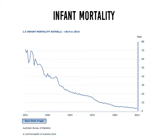Over time there have been quite a few initiatives or measures implemented to reduce the infant mortality rate. One of the important measures has been vaccination of children. From around 1940 on the graph, some important vaccinations were introduced — the diphtheria vaccination in the 1940s, the whooping cough vaccine in the 1940s and 50s, and the polio vaccine in the 1950s and 60s — and we can see significant reductions in infant mortality around those times.